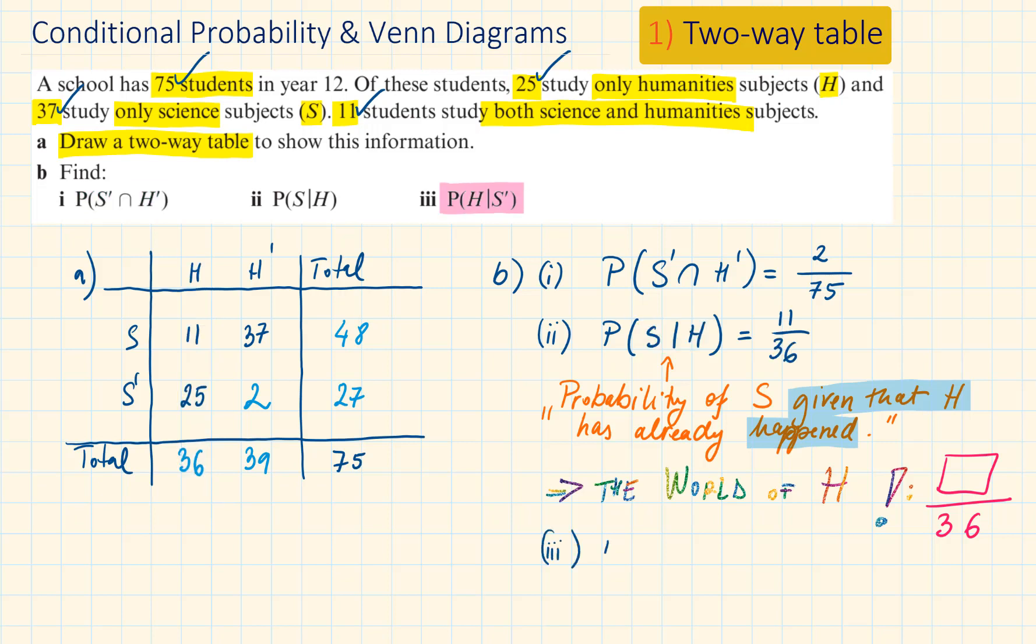And for the third part, what is the probability that the student studies humanities given that they are not studying science? So we are looking at the world of students who are not studying science. There are 27 of them. And 25 of these are studying humanities, so the probability is 25 out of 27.